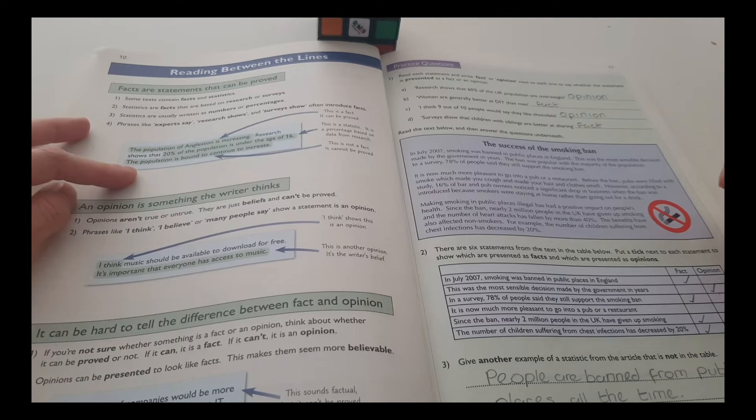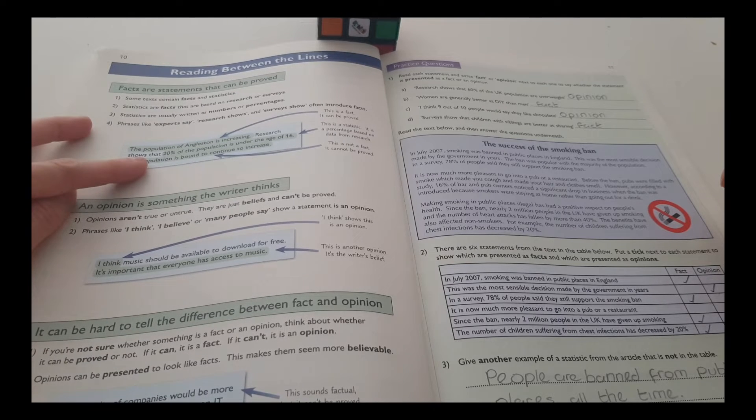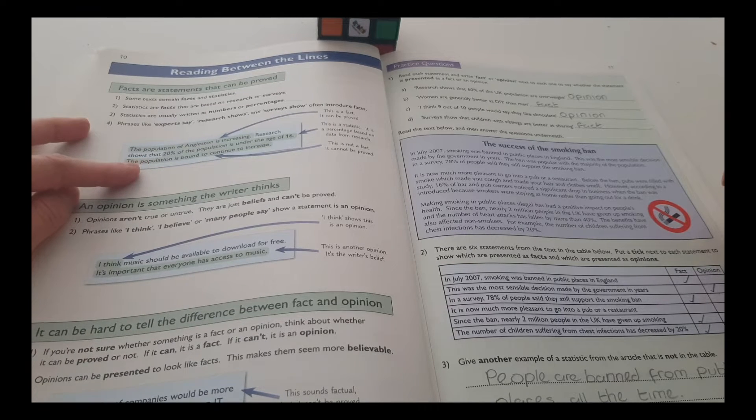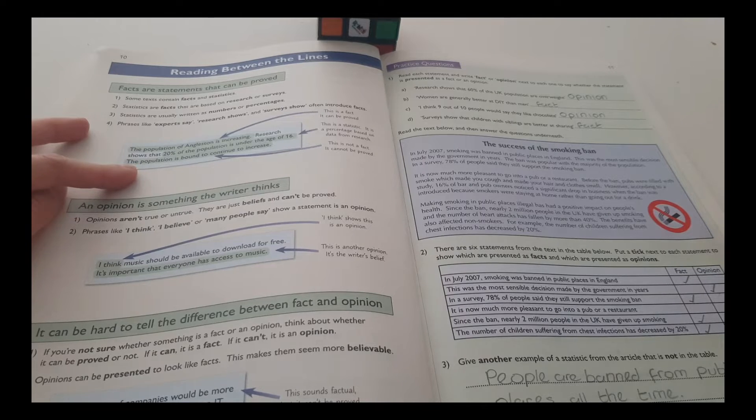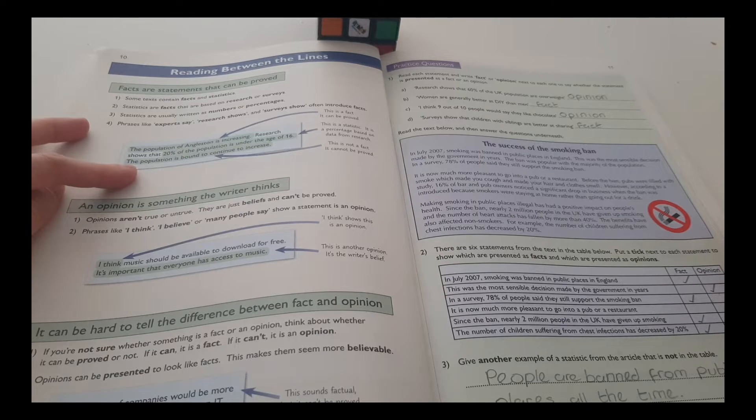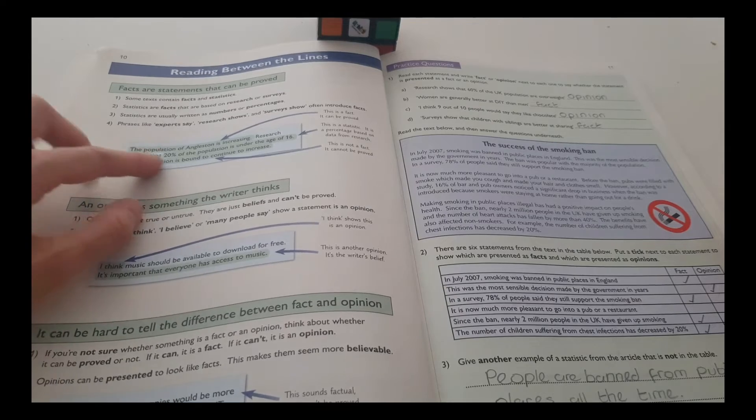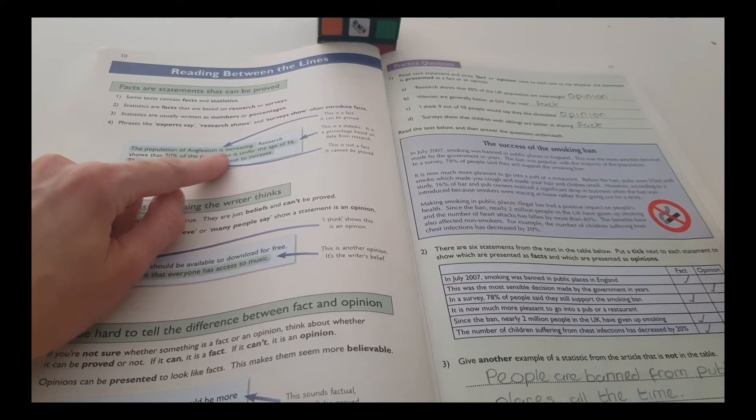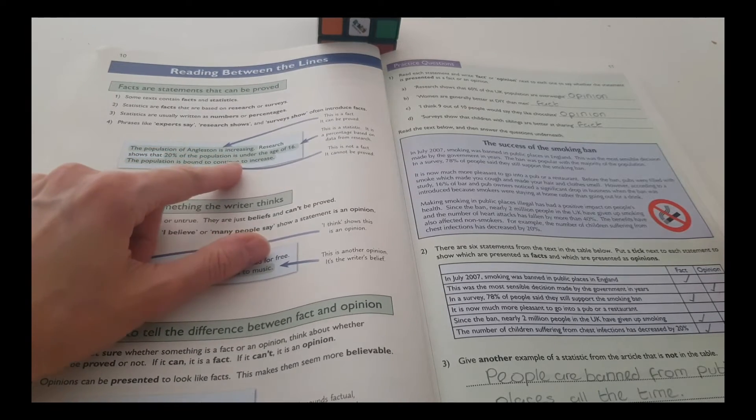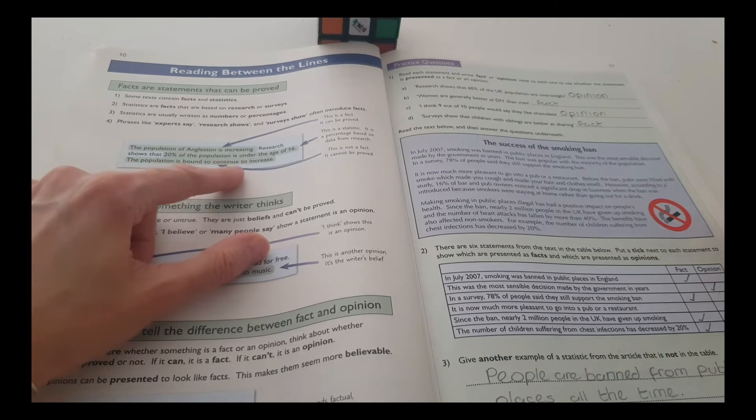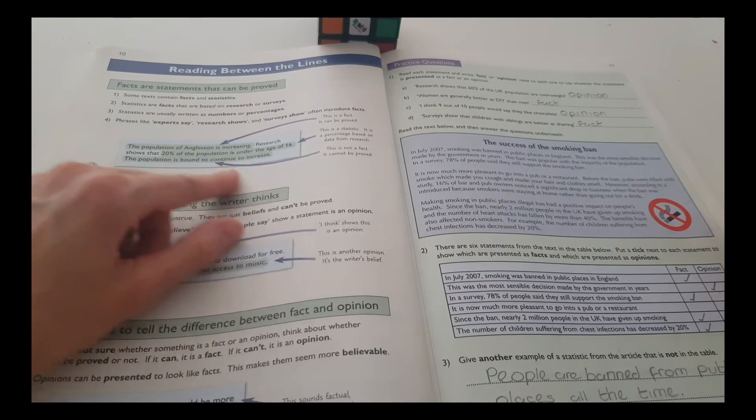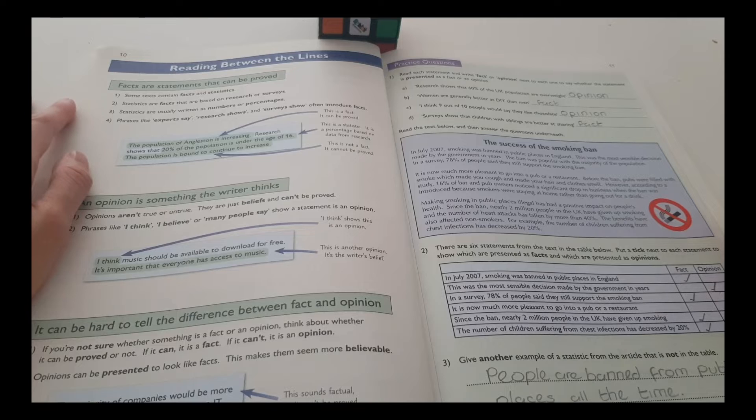The population of Angleston is increasing. Research shows that 20% of the population is under the age of 16. The population is bound to continue to increase. This is a fact. The population of Angleston is increasing. 20% of the population is under the age of 16. This is a statistic.